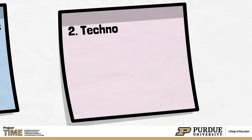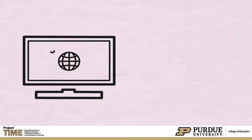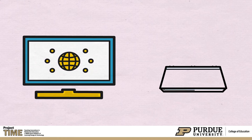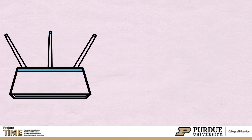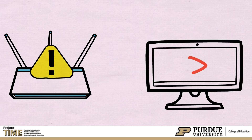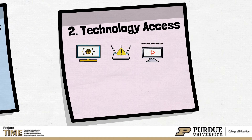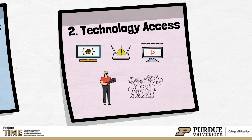Second, determine the technology access. Consider whether students will have access to a computer, video camera, and a reliable internet connection. Students with questionable technology access may be better served in asynchronous environments. To some degree, schools may already be aware of students without necessary technologies, but it is helpful for teachers to survey their students.